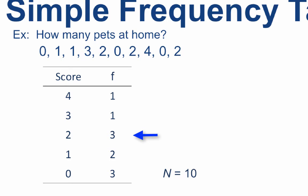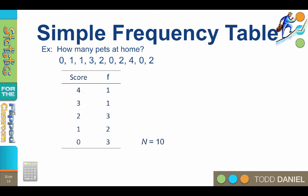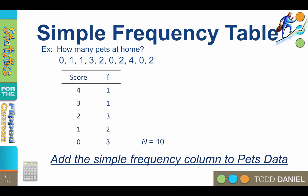What was the frequency for two pets? Three. How about for one pet? Two. And the frequency for zero pets was three. So now I have created my simple frequency table. You should add these numbers to your pet data table in your notes.